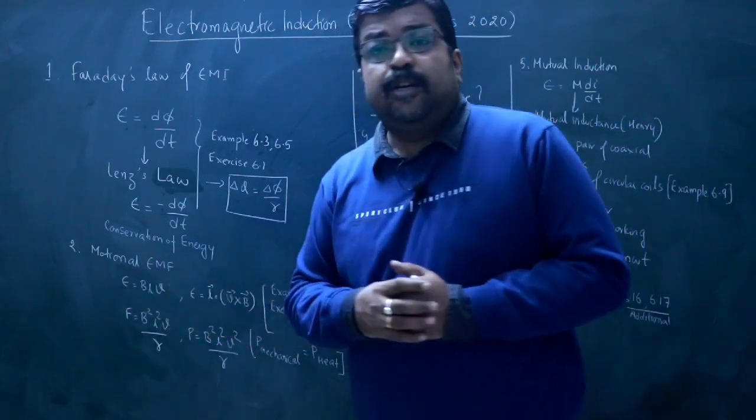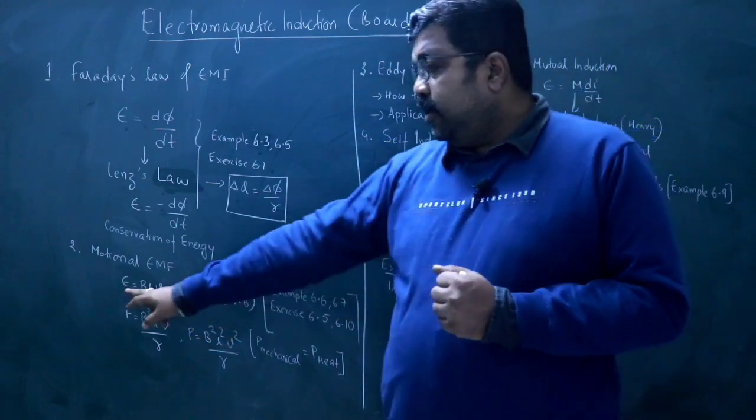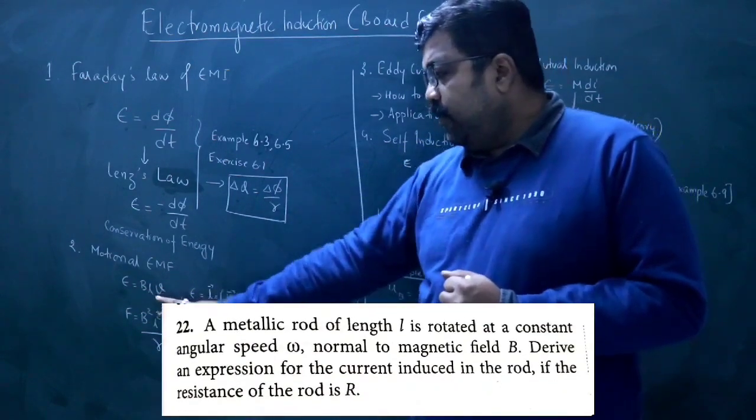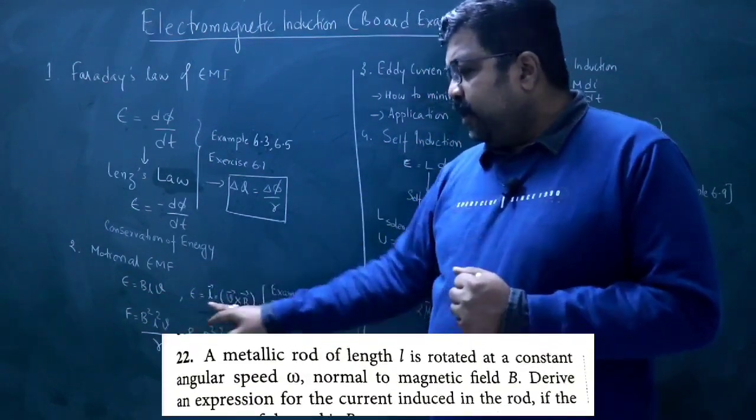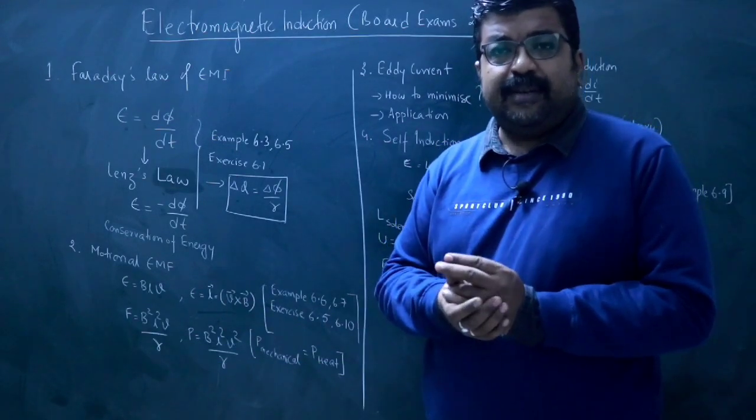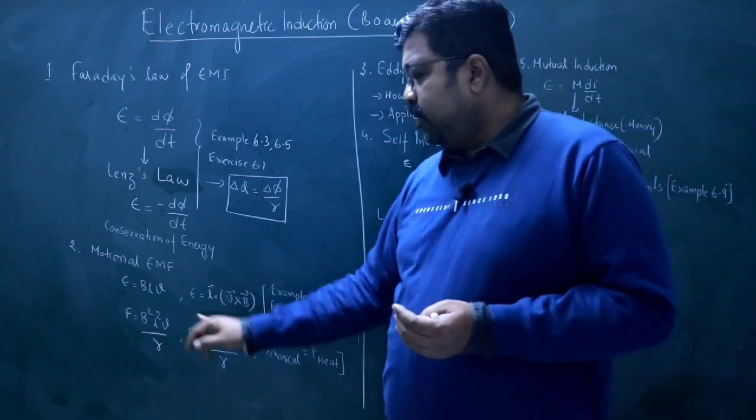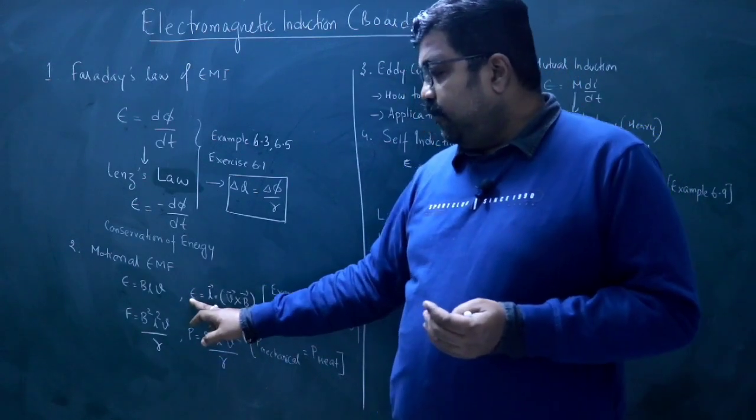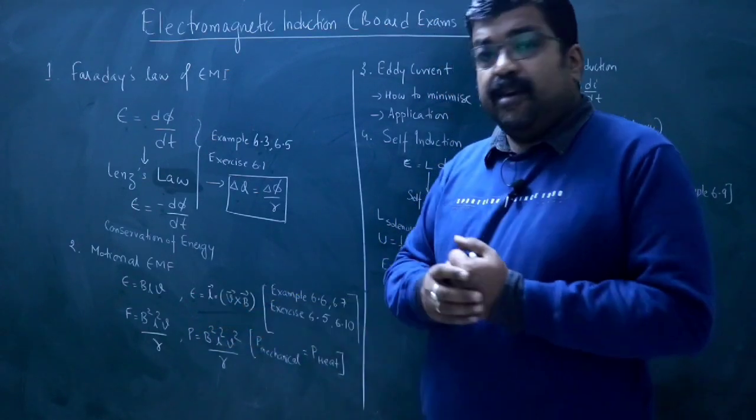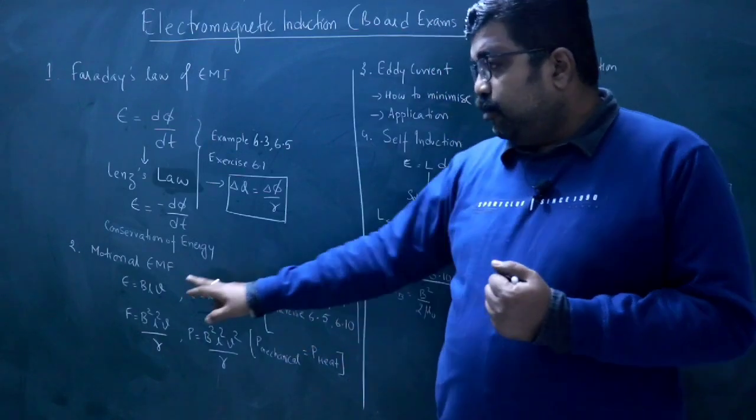Next topic is Motional EMF. In Motional EMF, the expression is E is equal to BLV. It is the derivation. It is in scalar form. It is in vector form. In vector form, it is not necessary for high secondary exam. But for your entrances, you need to learn this expression. So EMF E is equal to L dot V cross B. Here is L vector, V and B are the vectors.